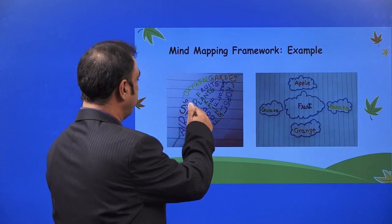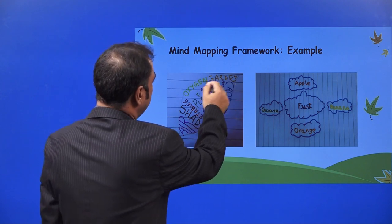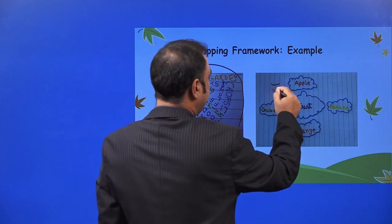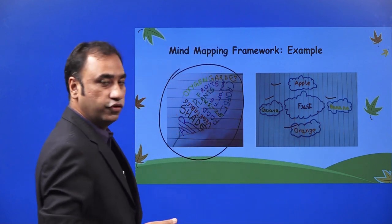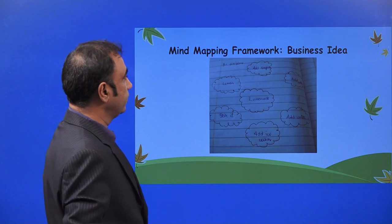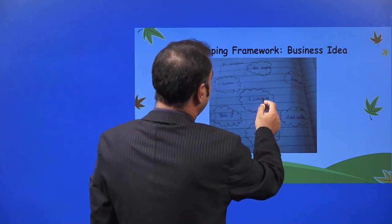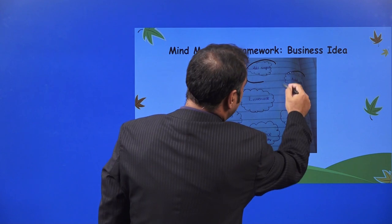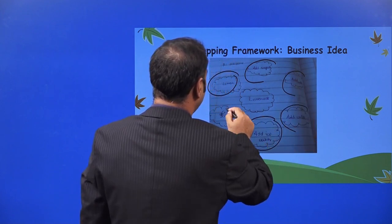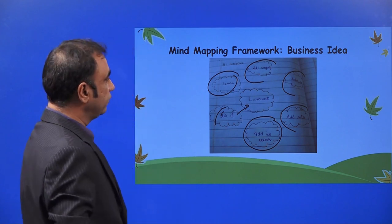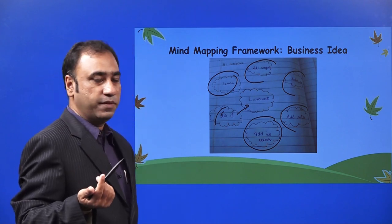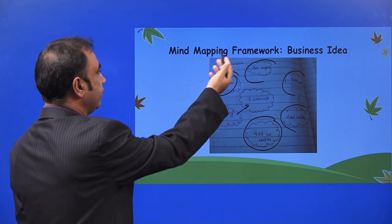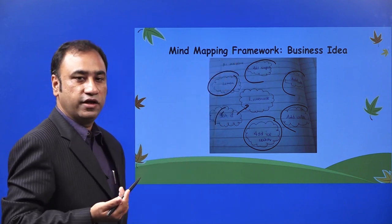Here are some examples where a kid is writing about food and all the foods are created in the form of a mind map — fruits, apples, guava, orange, banana. Another example is a business idea: lemonade. What are the ingredients required in lemonade? Lemonade requires a lemon, add sugar, add salt, add water, add ice cubes, stir it and your lemonade is ready. This is how you can create a mind map for a simple process — what things are required to create a lemonade.